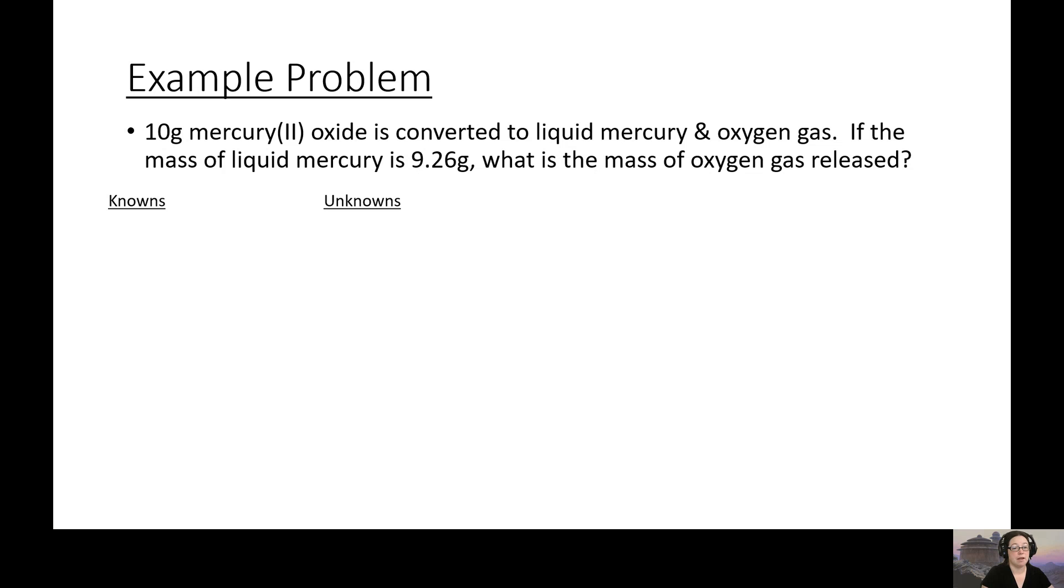Alright, so our knowns are that we have 10 grams of mercury(II) oxide, and that we have 9.26 grams, after that's been heated up, of liquid mercury. What we don't know is the mass in grams of oxygen. But we do know our law of conservation of mass, and that says the mass of the reactants, or whatever you start with, must equal the mass of the products. Since we started with this 10 grams of mercury(II) oxide, that's going to be our reactant. So we know that we have 10 grams here.